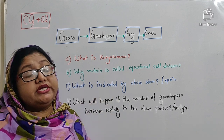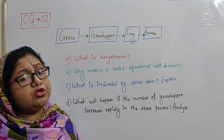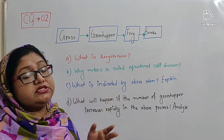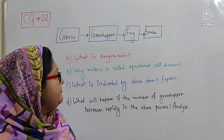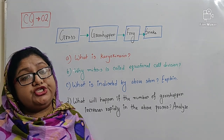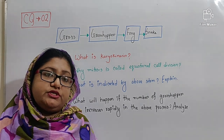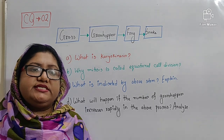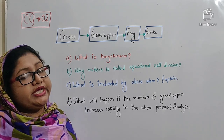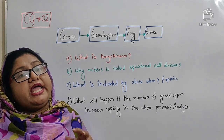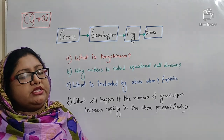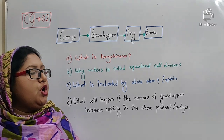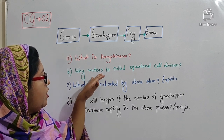Again: why is mitosis called equational division? In this case, you will also write down the definition first, then clarify why mitosis is known as equational division. First, the definition: the process of division in which the nucleus and the chromosomes of a mother cell divide only once and produce two daughter cells in which the number of chromosomes and other characteristics remain the same in the daughter cell as in the mother cell, is known as mitosis. In the second paragraph you will write: hence, in this division, the number of chromosomes in the daughter cell remains the same as the mother cell. That is why mitosis is known as equational division.